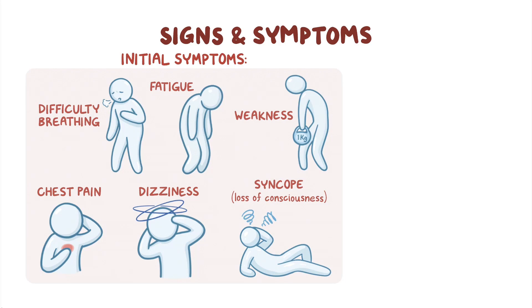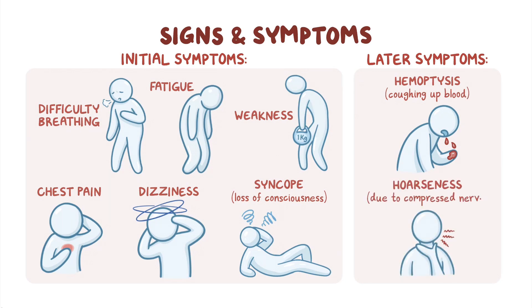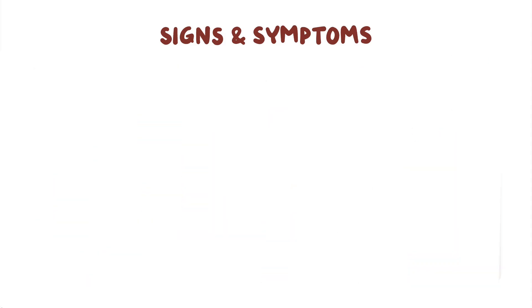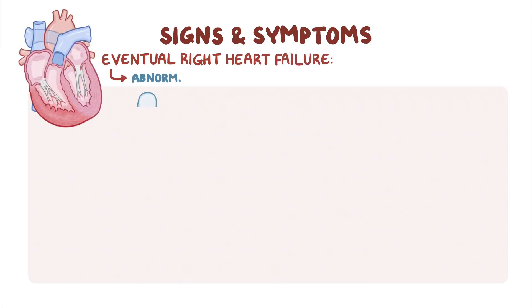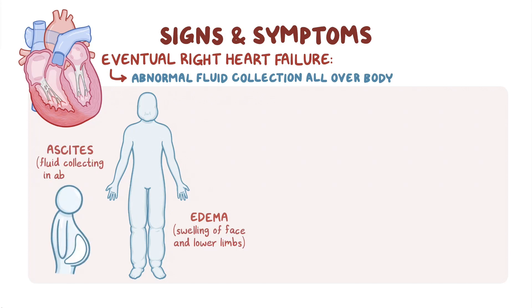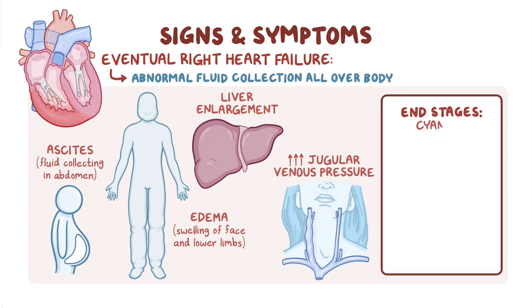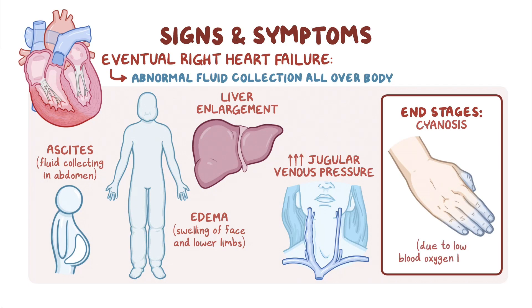As the disease progresses, signs of complications may start appearing, including hemoptysis, or coughing up of blood, and hoarseness due to compression of a nerve in the chest by an enlarged pulmonary artery. Eventually, untreated individuals end up in right-sided heart failure, which causes abnormal fluid collection all over the body, resulting in edema or swelling of the face and lower limbs, ascites or fluid collecting in the abdomen, liver enlargement, raised jugular venous pressure, and, in the end stages, cyanosis, or abnormal bluish discoloration of the skin due to low blood oxygen levels.